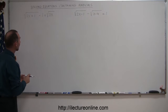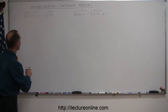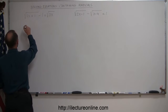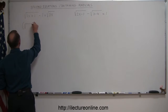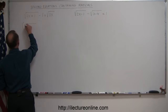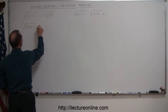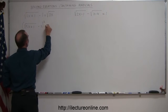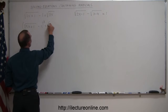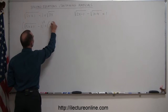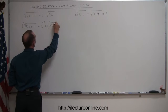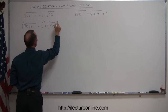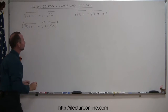The next step is to go ahead and square both sides of the equation. So I'm going to square the square root of 5x plus 1 underneath the radical, minus 1, and set that equal to the square of the right side, which is the square root of 3x, quantity squared.